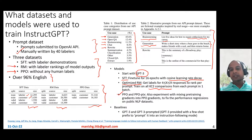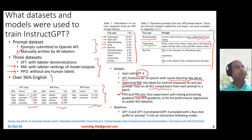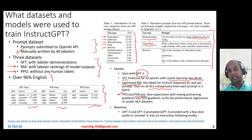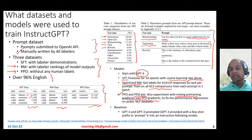They also train a PPO-PTX model, which is regularized with pre-training gradients. The reason is that with just PPO, the resulting GPT-3 model regressed on some generative benchmark tasks. So they decided to mix pre-training gradients with PPO gradients to avoid performance regressions on public NLP datasets. That's called PPO-PTX. Both PPO and PPO-PTX models are InstructGPT models in some ways.